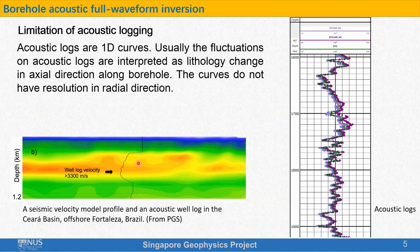For seismic, the velocity profiles are always 2D images or 3D volumes. We just talked about how acoustic logging data are affected by formation velocity around the borehole within about 1 meter. So here we may ask a question: for acoustic logging, whether the velocity away from the wellbore is important, and if it is important, how could we obtain velocity in both axial direction and in radial direction?